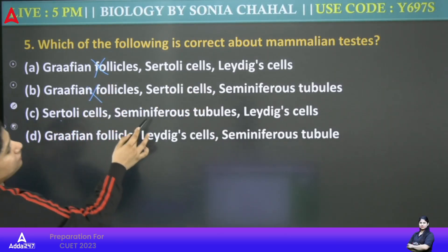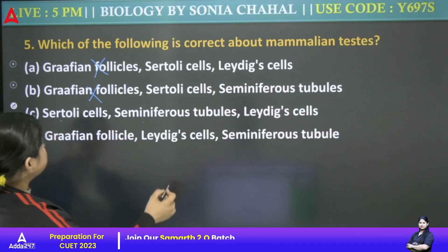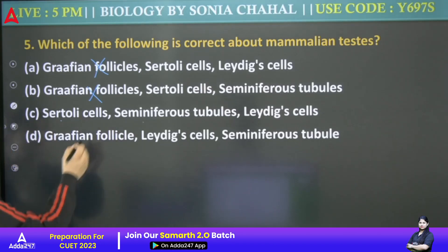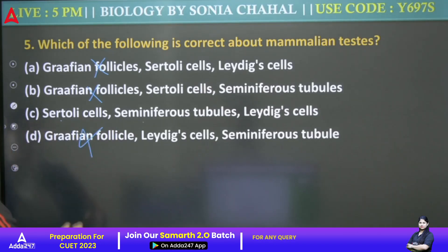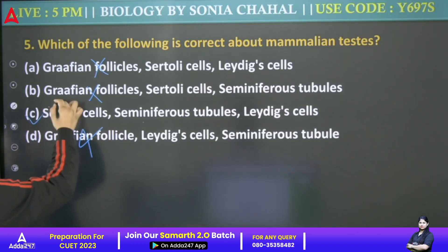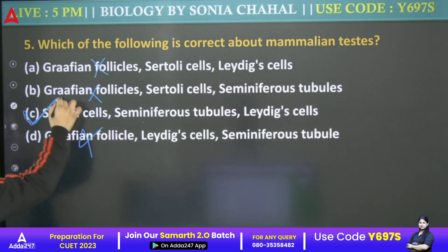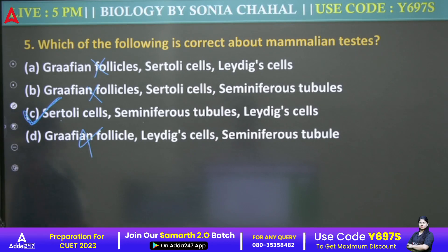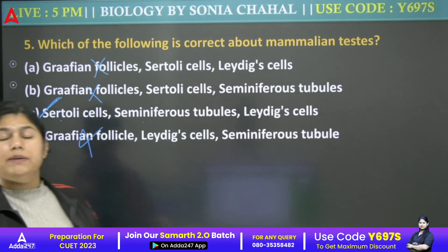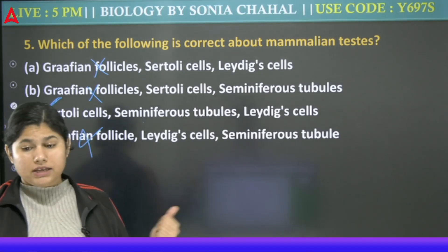Sertoli cells, seminiferous tubules, and Leydig cells — that is correct. Graafian follicles are incorrect. So the answer will be C.